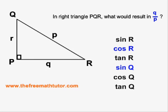In this case there are two right answers to this question. Cos of R is equal to Q over P, and sine of Q is also equal to Q over P.